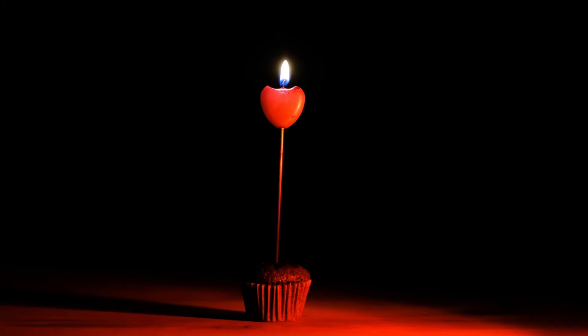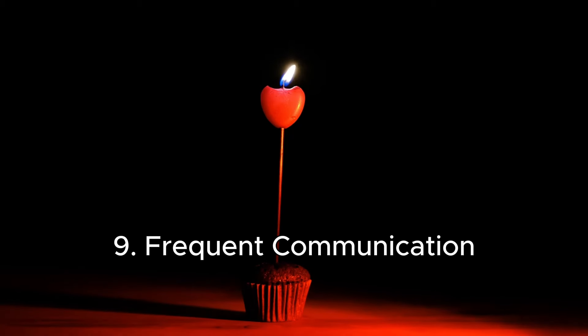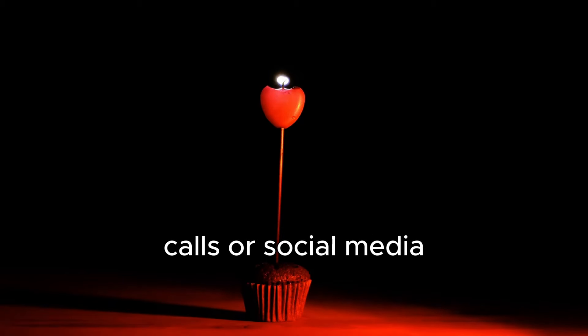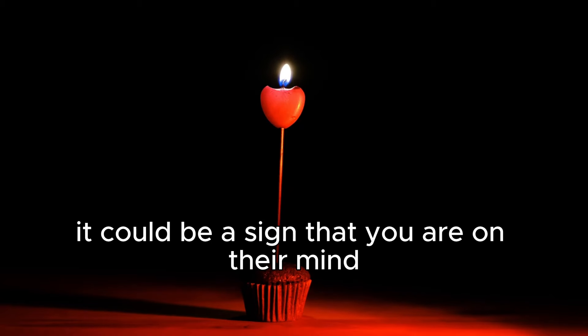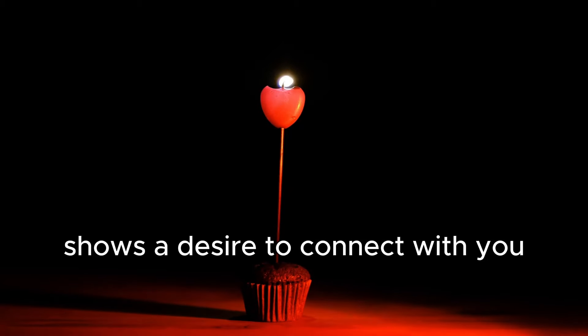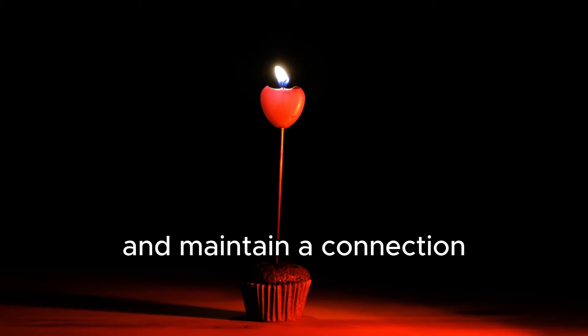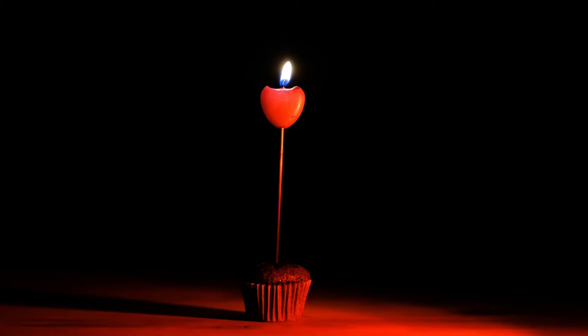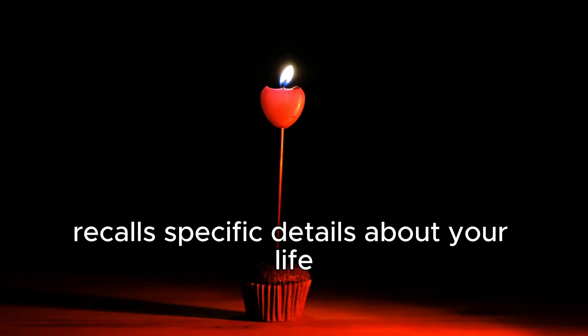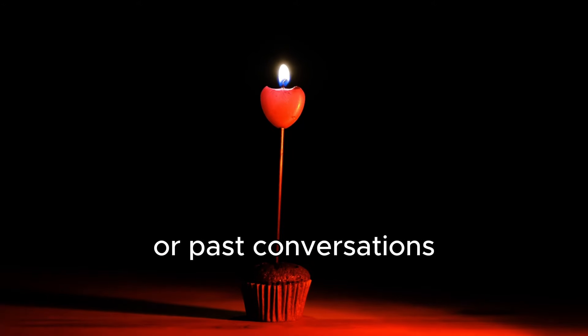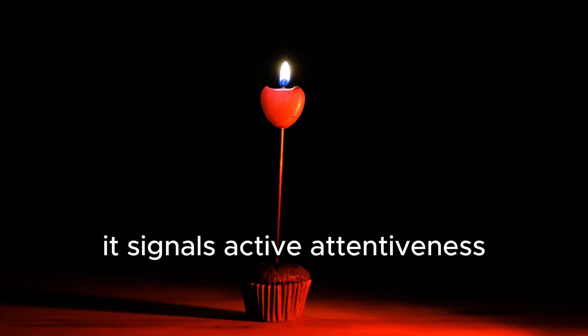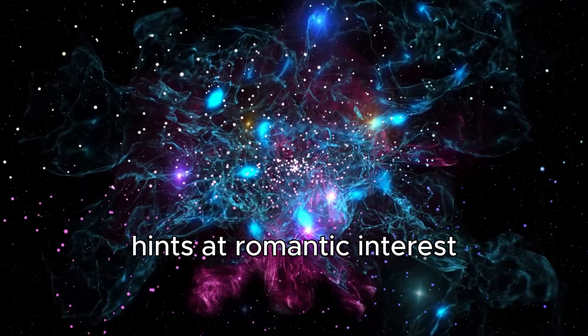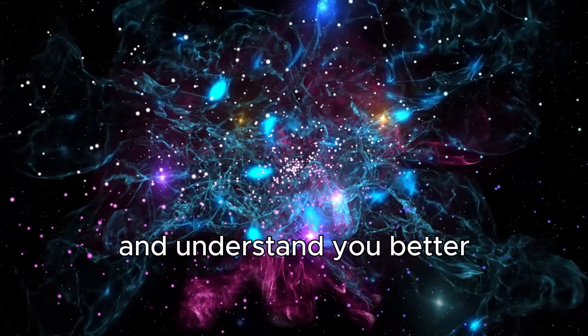Nine: Frequent communication. If someone is reaching out to you regularly through texts, calls, or social media, it could be a sign that you are on their mind. This consistent communication shows a desire to connect with you and maintain a connection. Ten: Recall of personal information. If someone consistently recalls specific details about your life, such as your interests, preferences, or past conversations, it signals active attentiveness. This heightened awareness often hints at romantic interest.